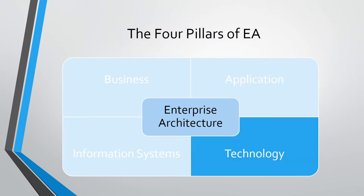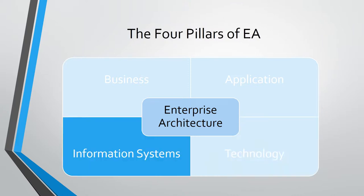Third is the technology architecture that the organization possesses in its arsenal. This could be the hardware, operating systems, or networking solutions, just to name a few examples. And last but not least, the information systems architecture within the organization, which collects, stores, and then identifies the raw data that the organization needs to operate at a higher efficiency. Examples of raw data include databases and spreadsheets.